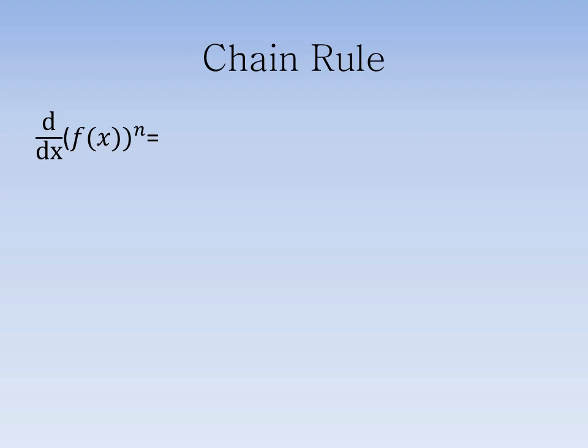This time, our function is raised to an exponent n. We know that to derive a function using exponents, we multiply the exponent by the coefficient and subtract our exponent by 1. In the chain rule, this idea does not change. Now that we have derived the outer function, we multiply the outer function by the derivative of the inner function.